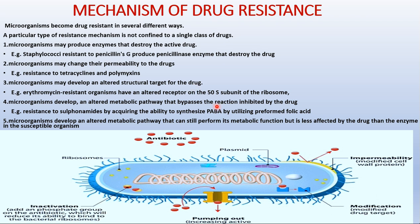Mechanism number three: microorganisms may develop an altered structural target for the drug. Microbial drug receptor sites undergo modifications, resulting in a decrease in antibiotic binding and antibiotic action. For example, erythromycin-resistant organisms have an altered receptor in the 50S subunit of the ribosome resulting from methylation of 23S ribosomal RNA. Similarly, resistance to some penicillins may be a function of loss or alteration of protein-binding sites.